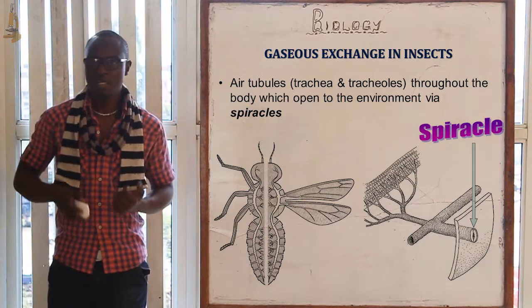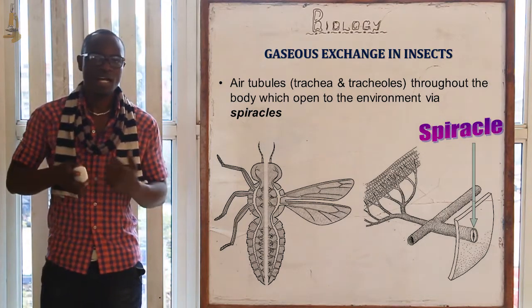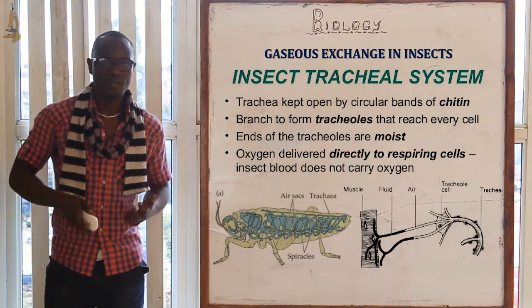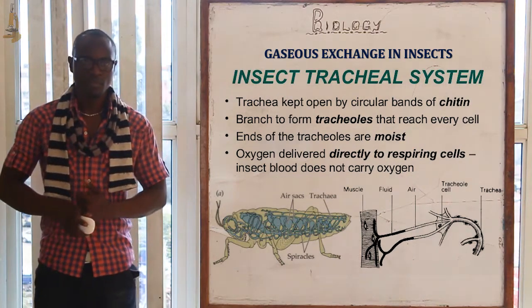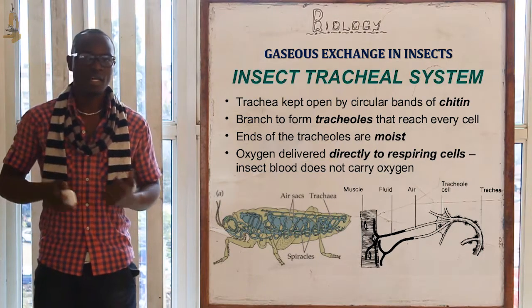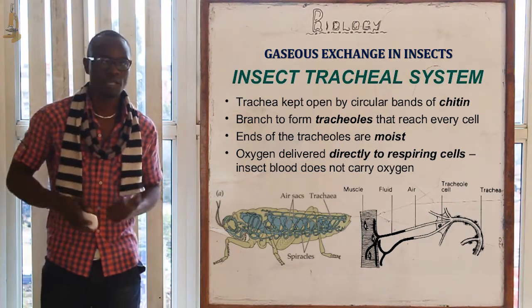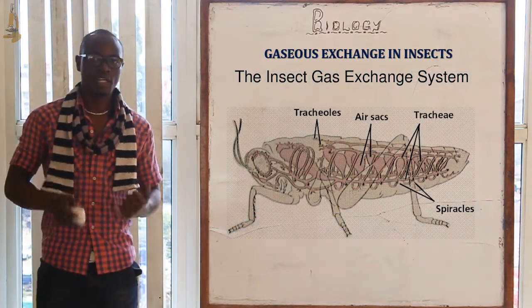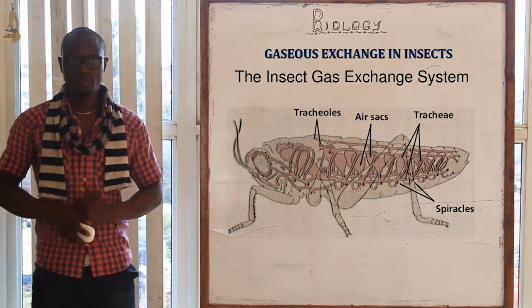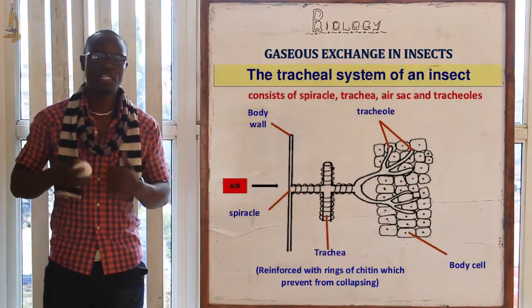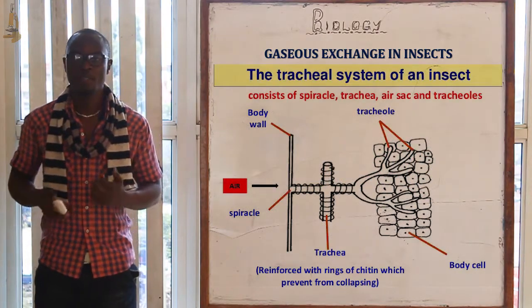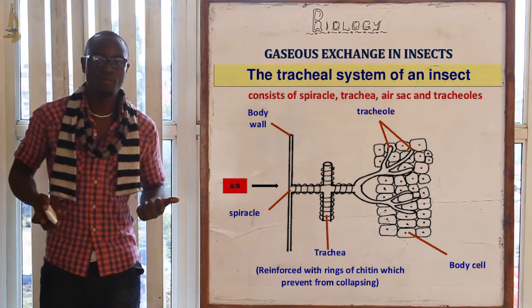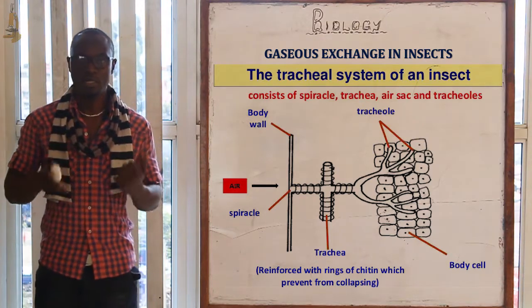The spiracles are external openings on either side of the abdomen and thorax of the insect, where air enters the body. Each spiracle has a muscular valve that controls the opening and closing, and hair-like projections that prevent excess water loss by evaporation. The spiracles open into large air tubes called the trachea, which penetrate the whole body of the insect. The tubes are reinforced with chitin bands that keep them open and prevent them from collapsing.